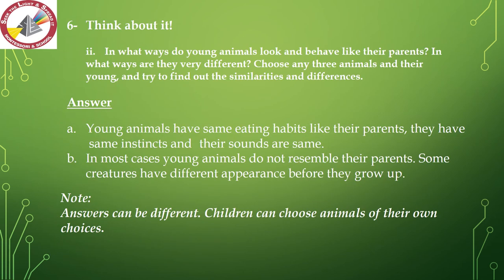Think about it part 2 — in what ways do young animals look and behave like their parents, and in what ways are they different? Choose any three animals and find similarities and differences. Young animals have the same eating habits and instincts as their parents, and their sounds are the same. In most cases, young animals do not resemble their parents in appearance. Some creatures have a different appearance before they grow up. You can choose animals of your own choice.